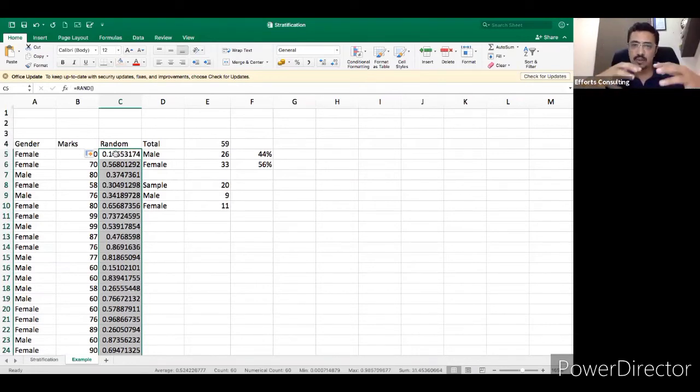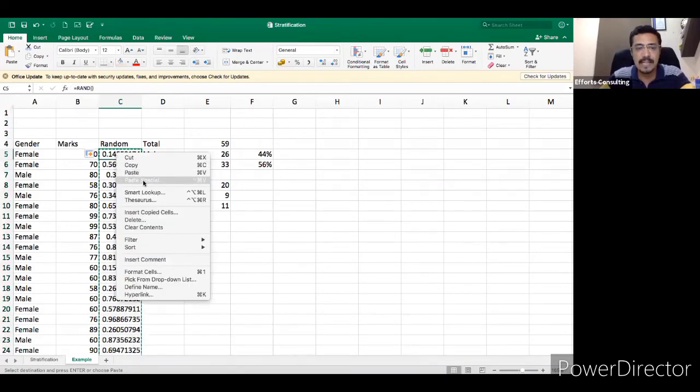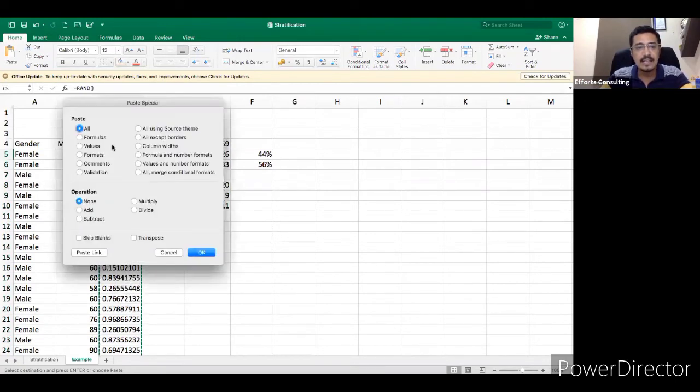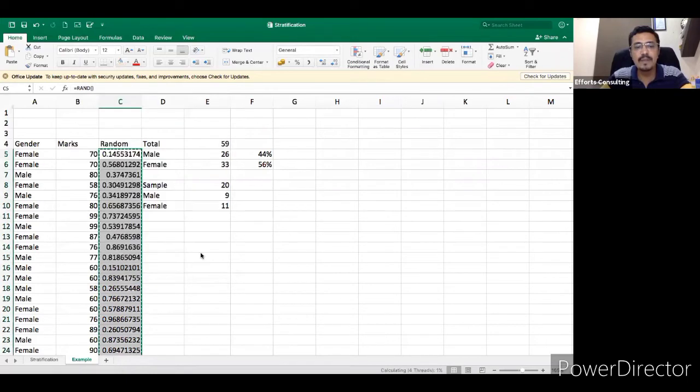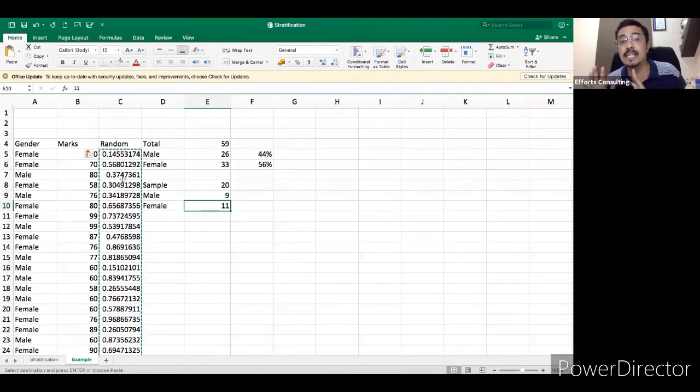But what is the problem? It's a random number, it's dynamic. So we have to make it static, fix it. What will I do? Control C, and I will paste it in the same column. I will go and paste, go to special, and then I will click on the values and click okay. So it's fixed. So what I got to know? I had to select 20 samples. What was the weightage? I got to know how many are the males, how many are the females. And the random numbers I have to choose randomly. Now I am done.